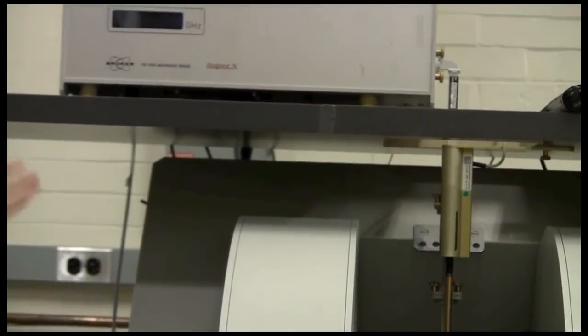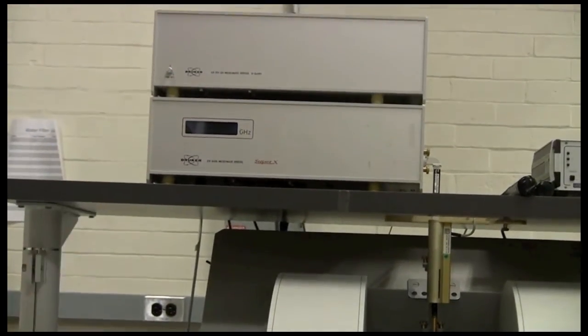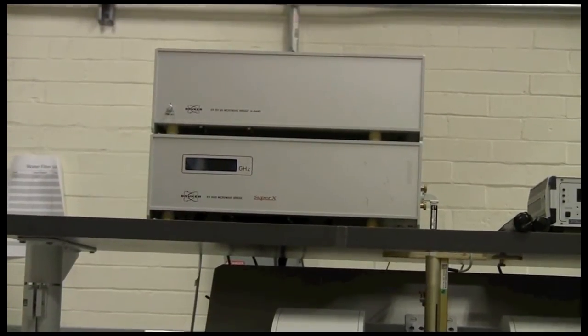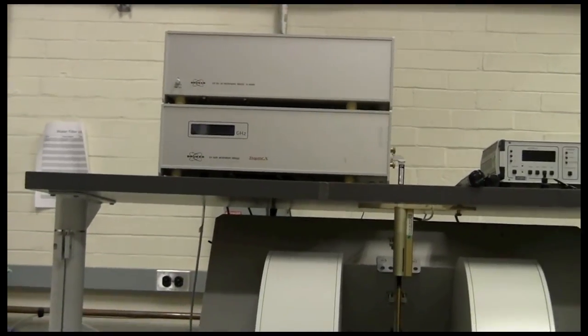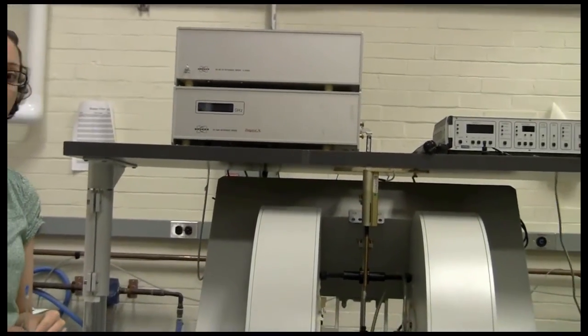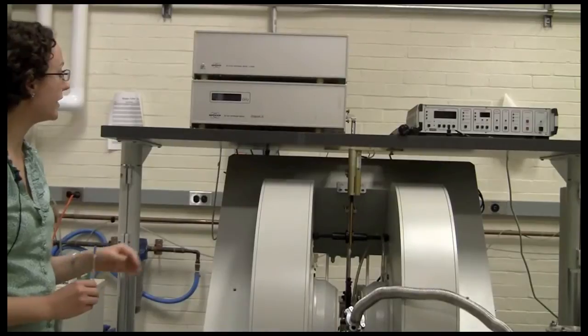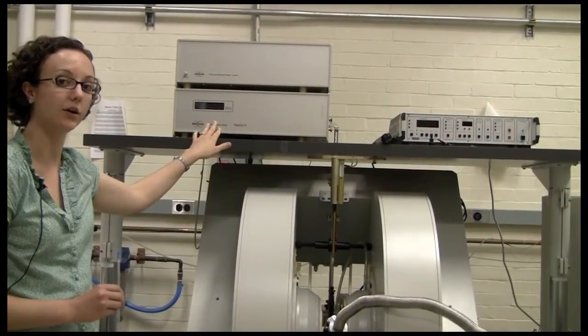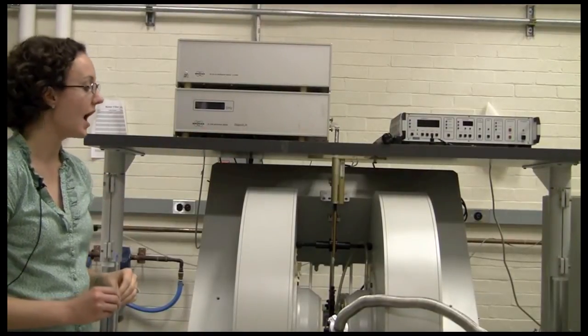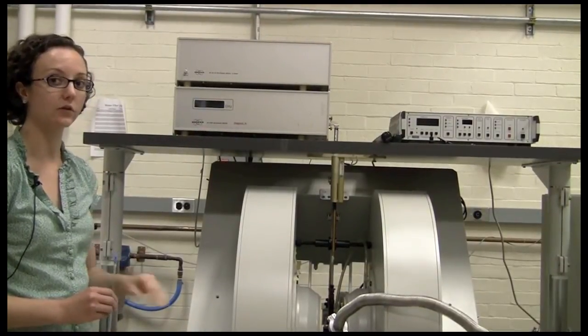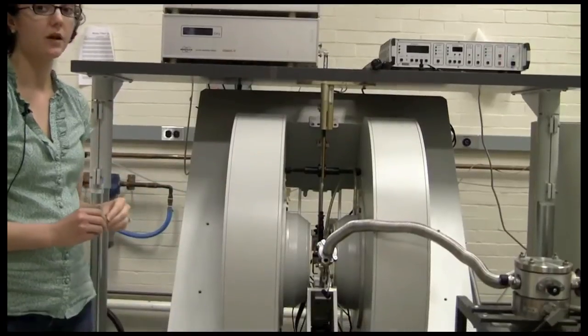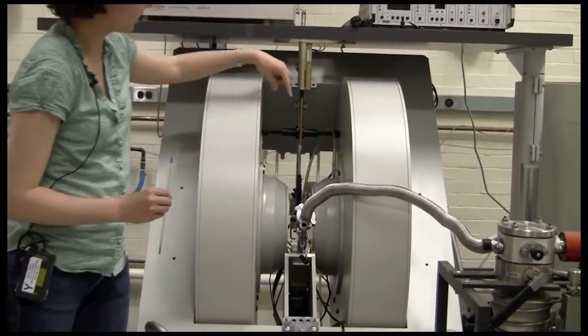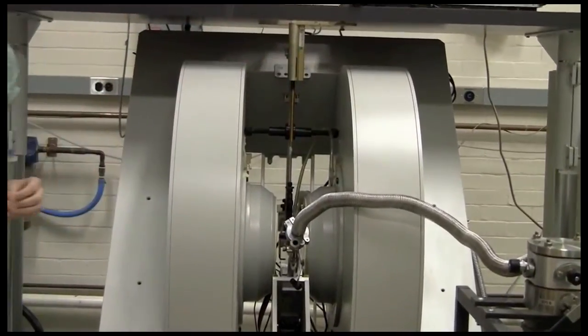We measure the EPR spectrum using our EPR spectrometer. EPR is a magnetic resonance technique, which means we need both a magnetic field and an electromagnetic frequency. For EPR spectroscopy, we fix the electromagnetic frequency around 9 gigahertz, which is in the microwave region, and then we scan the magnetic field using our electromagnet here with measuring the sample in the center of the magnetic field.